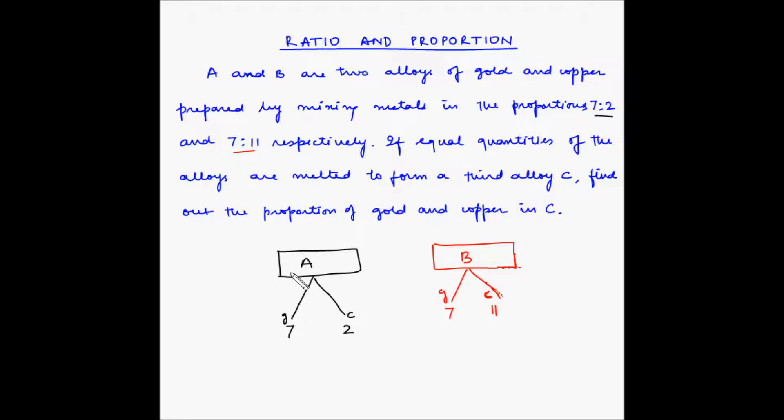What does this mean? What this means is that if you take some portion of alloy A and melt it, let us say you get this melted A. Let us assume this is 9 kgs of melted A.